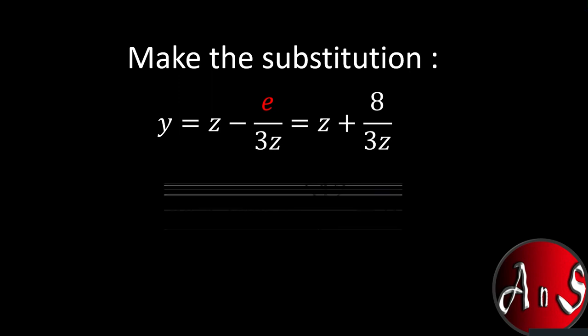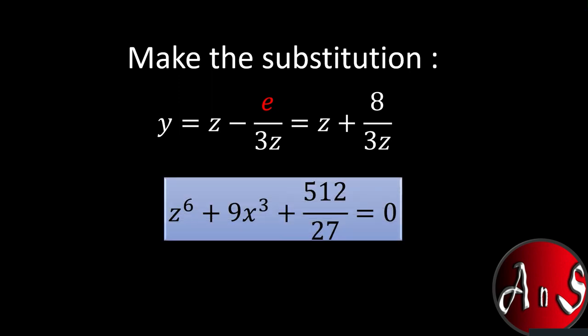Where we are again going to make a second substitution, this second substitution by introducing a new variable z is y equals z minus e upon 3z. Since e is minus 8, we get z plus 8 by 3z. Now plugging in the values we get z⁶ + 9z³ + 512 upon 27 equals zero.